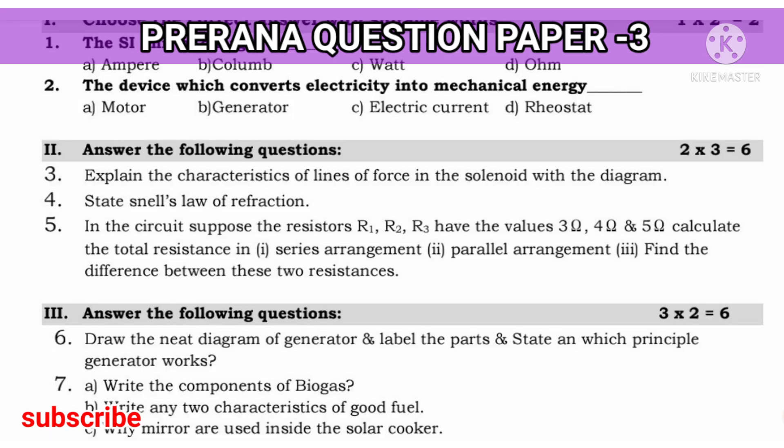Next, two marks question: explain the characteristics of the lines of force in the solenoid with the diagram. So, you have to draw a diagram of solenoid, along with characteristics. Characteristics: strength of the magnetic field produced by the solenoid is directly proportional to the number of turns on the solenoid and also current passing through it. You can write this for two marks.